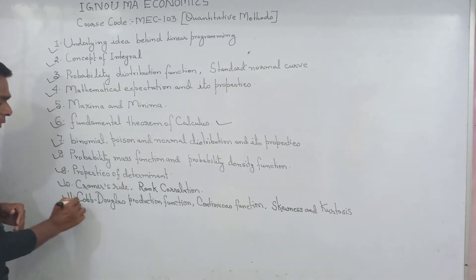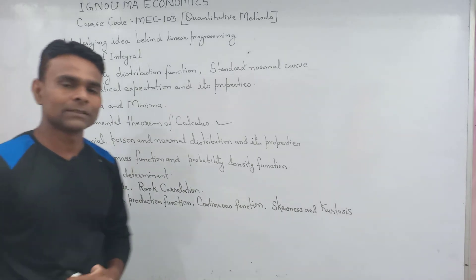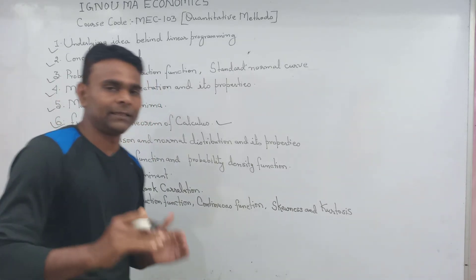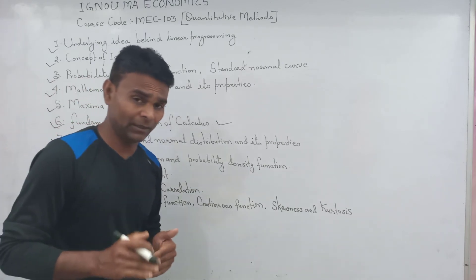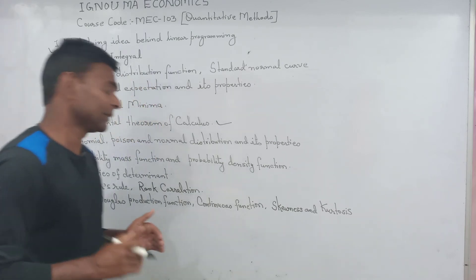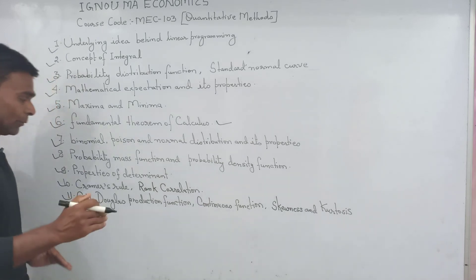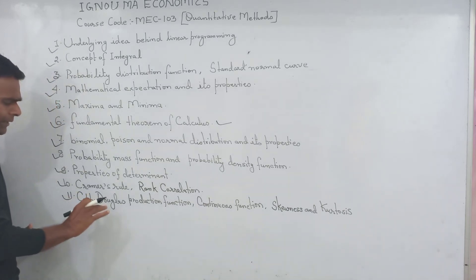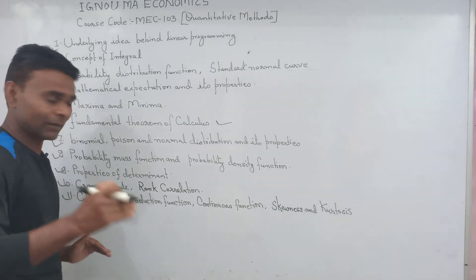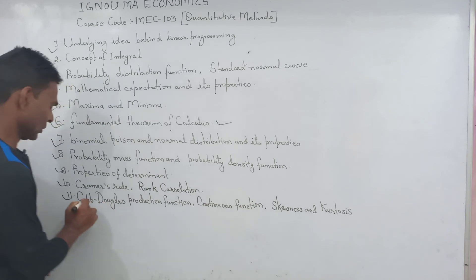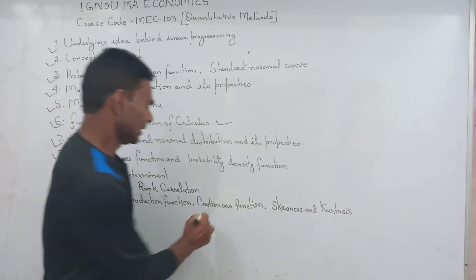Cobb-Douglas production function can also produce a question — marginal and average productivity of labor depending upon the capital-labor ratio.